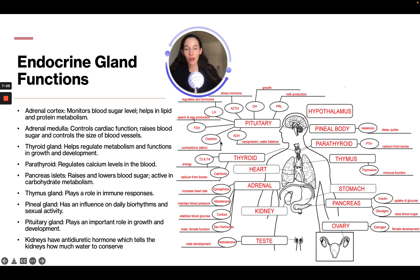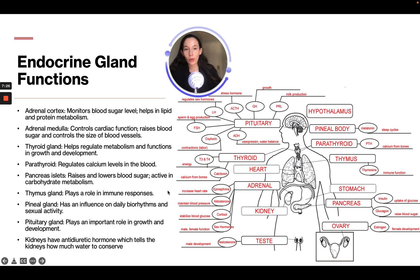The pituitary also releases oxytocin, which has to do with labor contractions, and ADH — vasopressin — related to water balance. The kidneys have an antidiuretic hormone that tells the kidneys how much water to retain.